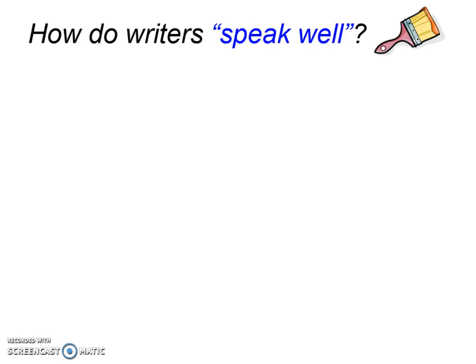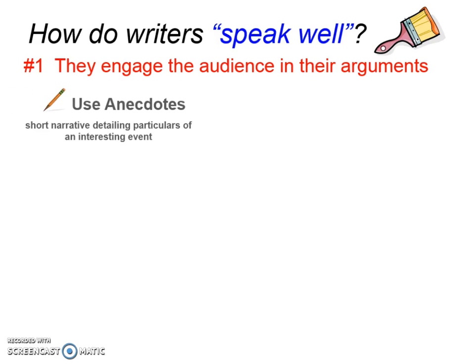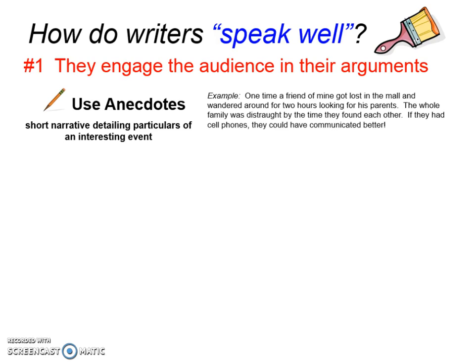How do writers speak well? We've talked about sounding fair-minded and sounding intellectual and smart — knowing your facts. But another way to be a better rhetorician is to speak well. I have a paintbrush up there because it's almost like using words to paint pictures for the person listening to you. Number one: they engage the audience in their arguments. How? They use anecdotes — short narratives, little stories detailing particulars of an interesting event. If you can paint a picture where your listener can see it in their minds, they are won over even more because their emotional side is turned on.